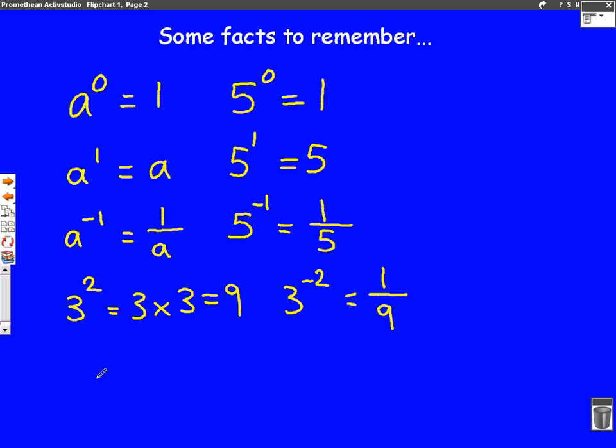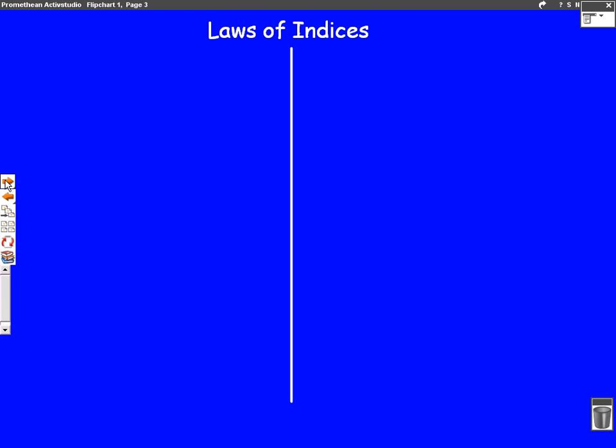Now we're going to move on and do some harder questions. We'll start with the most basic rule of indices: t squared times t to the power of three. When you times t's, we just add up the powers. So the power is two and the power is three, add them up, you've got t to the power of five.